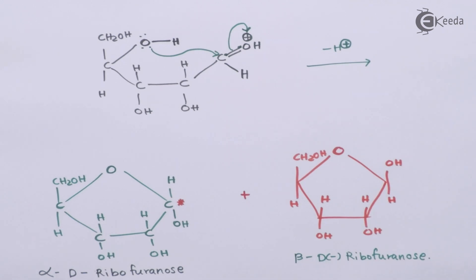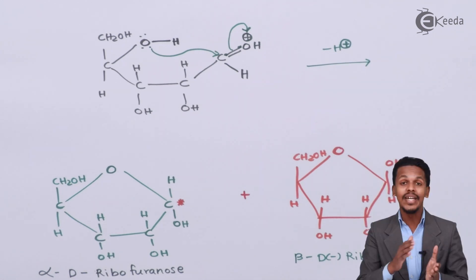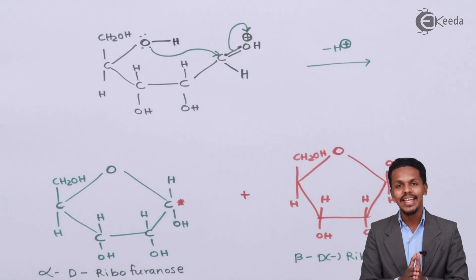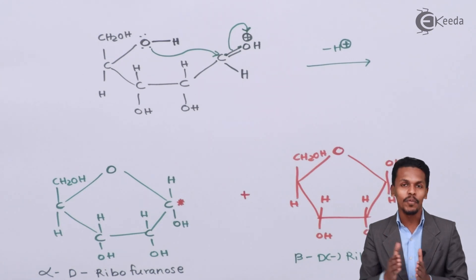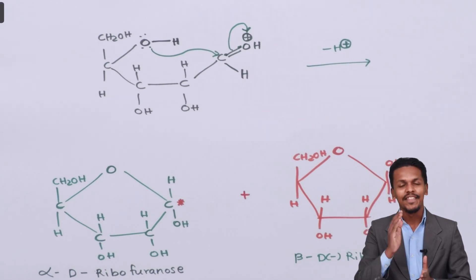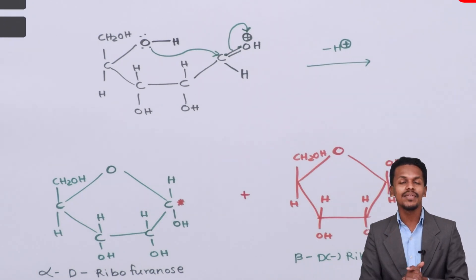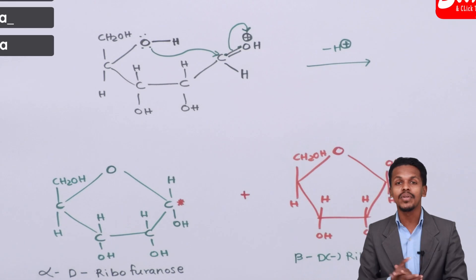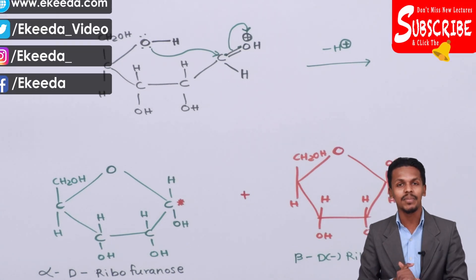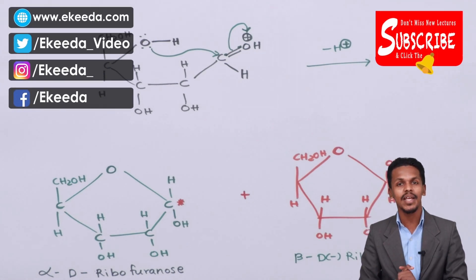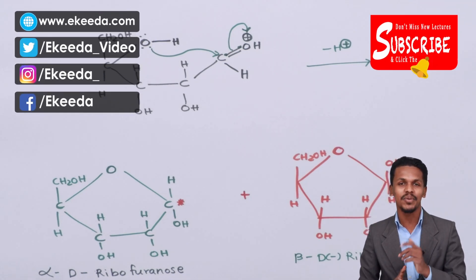This is how we can convert the Fischer projection formula for D-ribose into the Haworth projection formula. Thank you friends for watching this video. I hope you have understood this clearly. Don't forget to subscribe to the Ikera channel. Thank you so much.